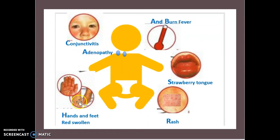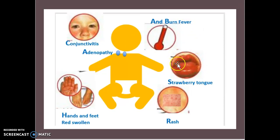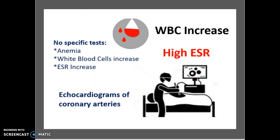Here's a little diagram to show how it works. There's conjunctivitis and adenopathy, and there is a burning fever. The strawberry tongue tends to look very reddish-pink, a very dark color. Rashes are present, and the hands and feet tend to be very red and swollen.